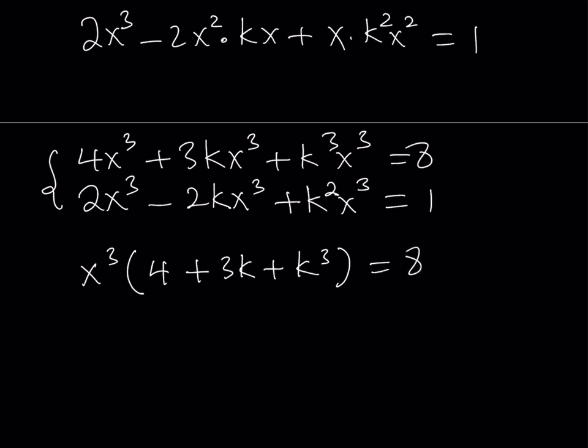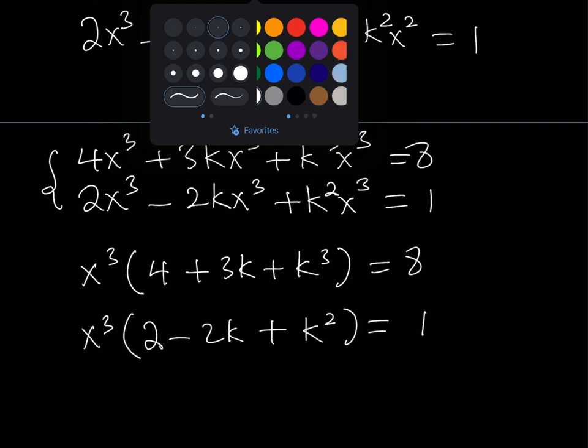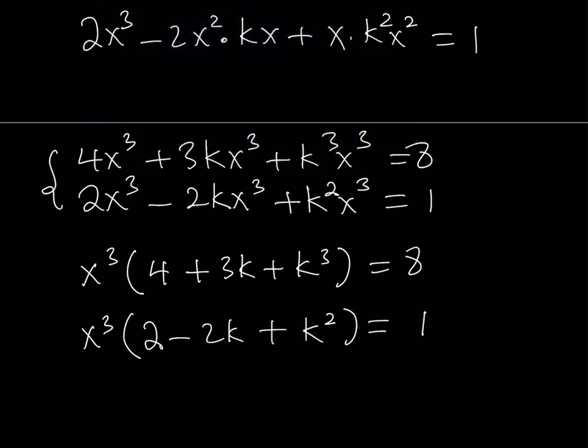And the second one gives us x³ times 2 minus 2k plus k². And that is equal to 1. So if we go ahead and divide both of these equations side by side, we're going to be able to simplify this even more.